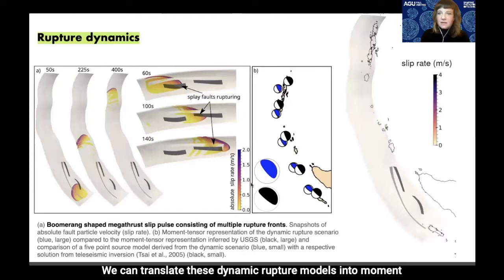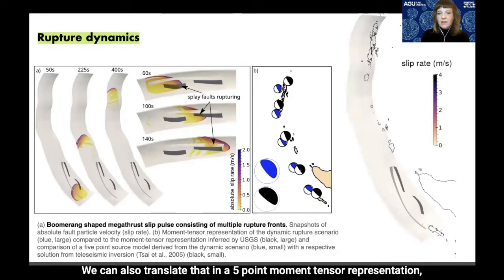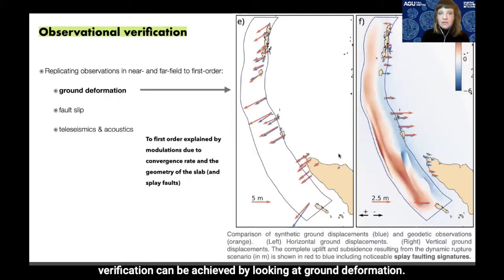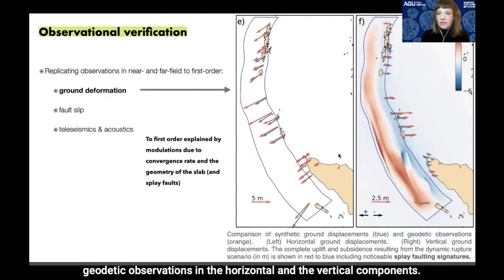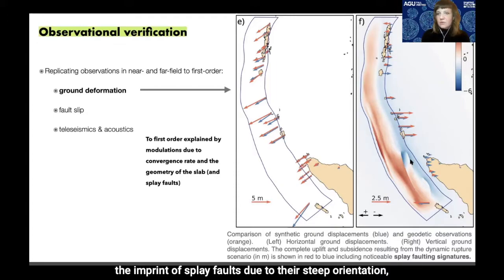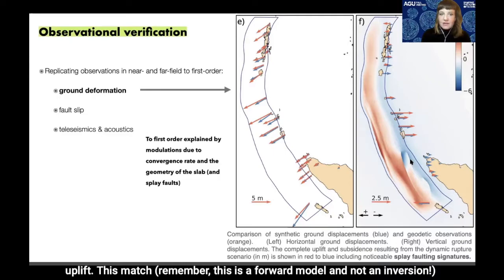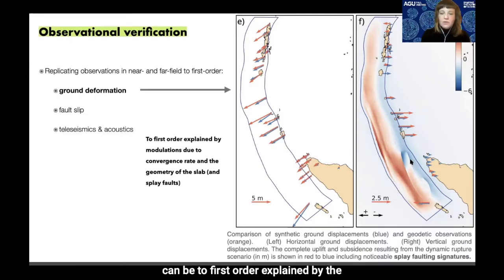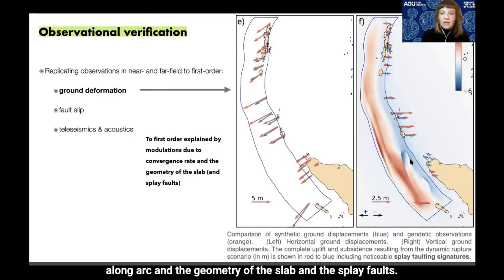We translate these dynamic rupture models into moment tensor representations and compare them to observations, including a five-point moment tensor representation that aligns nicely with observations. Further observational replication is achieved by looking at ground deformation — synthetic ground displacements in blue and geodetic observations in orange for horizontal and vertical components. In the vertical component we can see the imprint of splay faults due to their steeper orientation. This first-order match for a forward model — not an inversion — is explained by the convergence rate variations along arc and the geometry of the slab and splay faults.